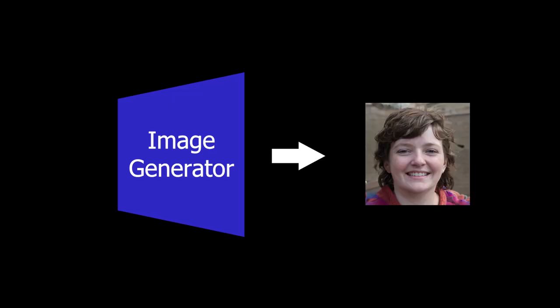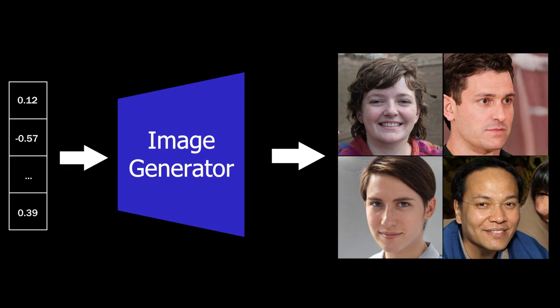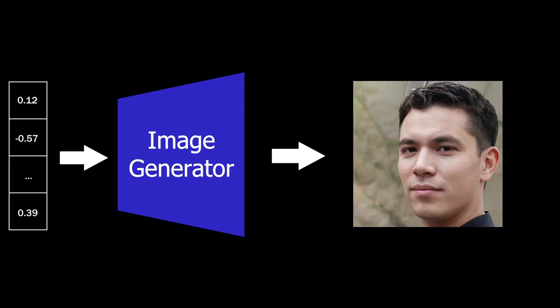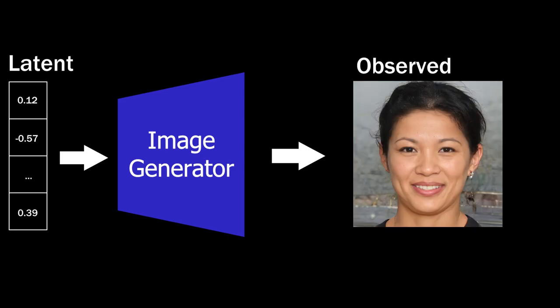Ultimately, we want a program or model that pops out a realistic image, but not just one — we want it to produce a diversity of realistic images. This diversity is introduced with randomness. Rather than producing the same image every time, the model can be fed a bunch of random numbers and generate a different image based on that input. All deep learning methods rely more or less on this paradigm: random noise in, realistic image out. More technically, this random input is known as a latent variable, as opposed to an observed variable like the output image.